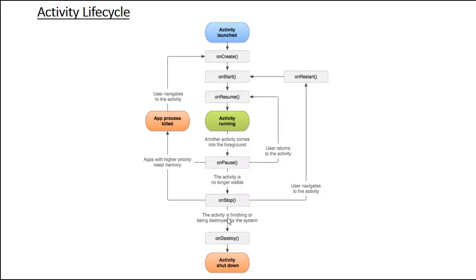After finishing onStop, if the activity is finishing or being destroyed by the system — that is, if the user calls the finish method or the system destroys it — the Android system calls the onDestroy method. At that point, the instance of the activity is completely removed from memory, meaning the activity is in the shutdown state.